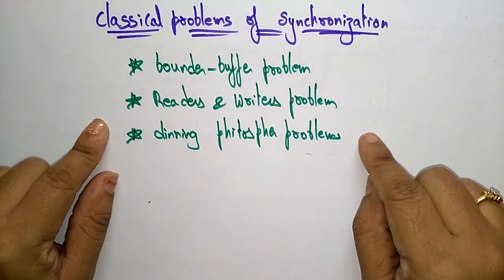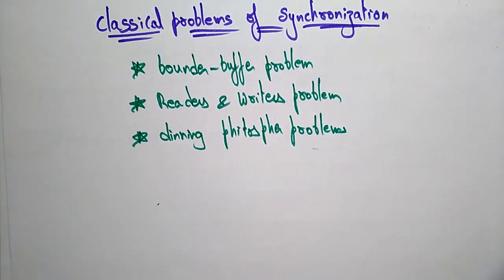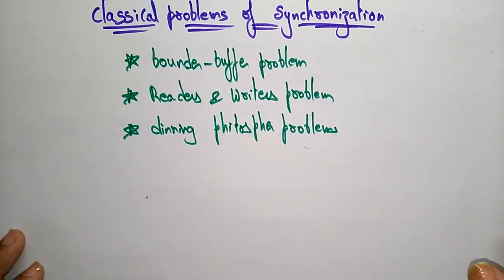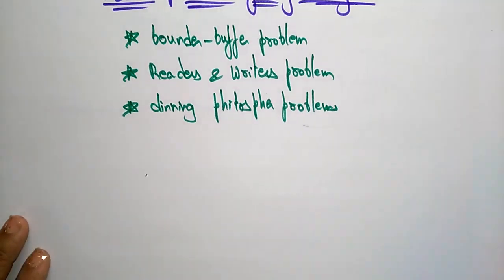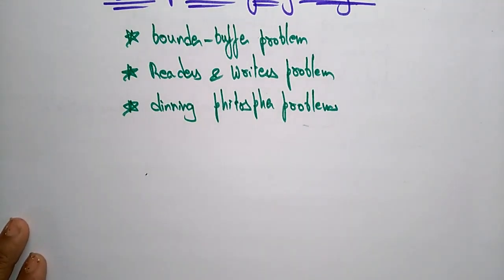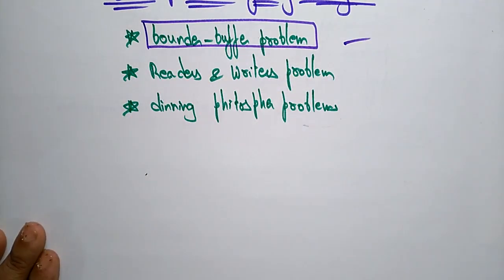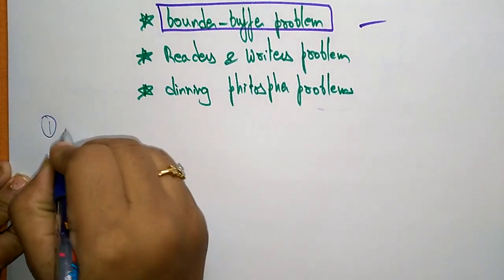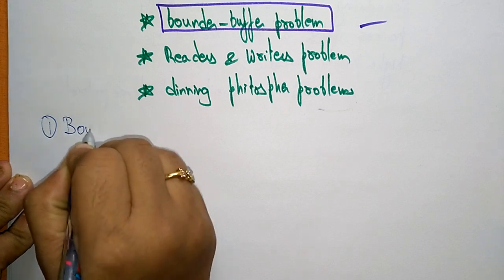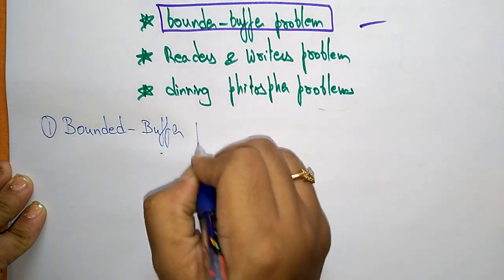The bounded buffer problem, readers-writers problem, and dining philosophers problem can be solved by using semaphore variables — that is, by using the semaphore technique. So let us first discuss the bounded buffer problem and how it can be solved using semaphore variables.